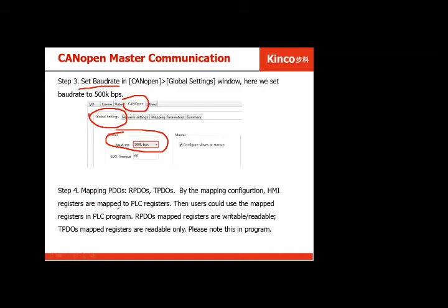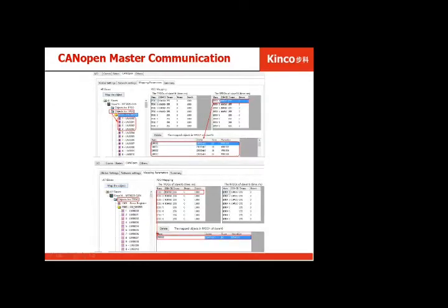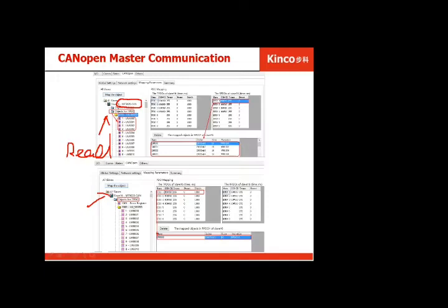Step four is mapping the PDO — both RPDO and TPDO. Here is an example using the HMI EDS. You select the HMI as a slave and find the object from the EDS. It has different values for different addresses. RPDO means read, and TPDO means transmit, or send.